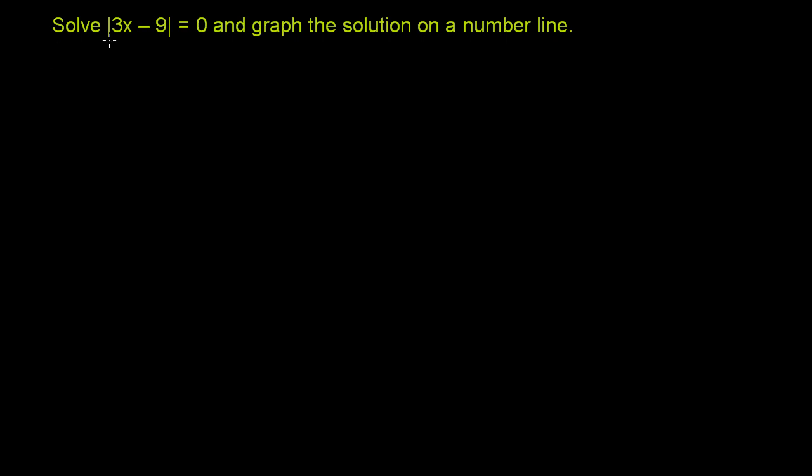We're told to solve the absolute value of 3x minus 9 is equal to 0, and graph the solution on a number line. So let's just rewrite the absolute value equation. The absolute value of 3x minus 9 is equal to 0.